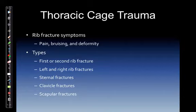Thoracic cage trauma: rib fracture symptoms include pain, bruising, and deformity. First or second rib fractures indicate an injury with significant force — these ribs are also somewhat protected by the clavicle — and may indicate injury to the aorta or trachea. Lower left rib fractures may cause an underlying splenic injury, as the left upper quadrant of the abdomen houses the spleen, and trauma to the lower left rib cage could lacerate the highly vascular spleen.